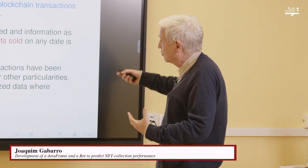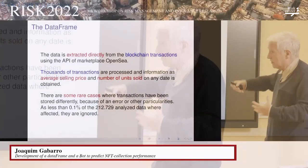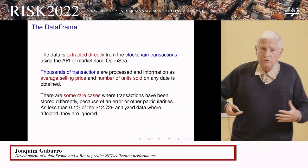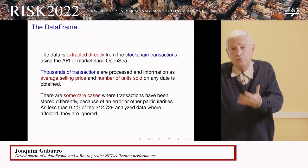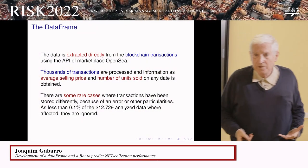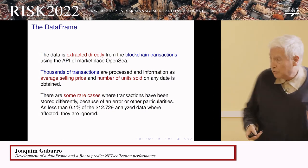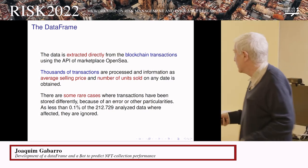The raw information needed to be transformed into something useful. Thousands of transactions were processed in order to obtain interesting aggregate metrics such as average selling price or number of units sold per day.